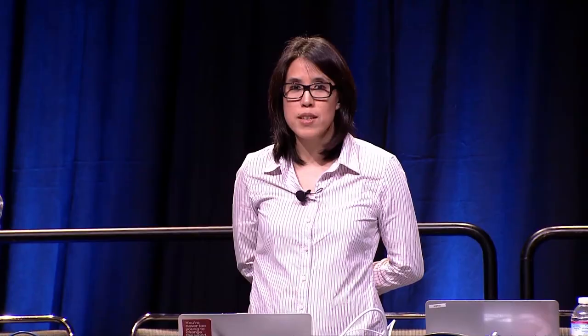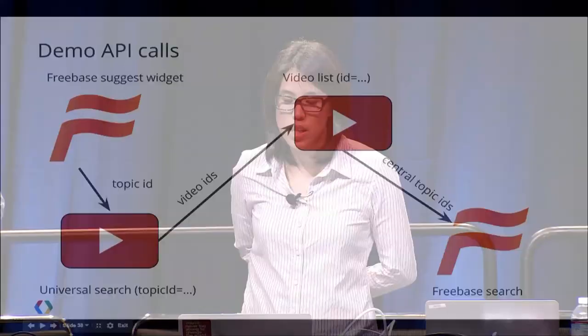So just to summarize, we're fetching content on YouTube based on a specific Freebase topic ID selected by the user using the Freebase suggestion widget. Once we have a topic ID, we can discover content on YouTube using universal search — finding videos, channels, and playlists. In this particular case, we're interested only in videos. Suppose the user selected origami — we find 100 related videos. Now we want to see, are these videos about more than just origami? We find the other central topics by going to the videos list service, find those central topics, and then look up the notable types and cluster based on that.